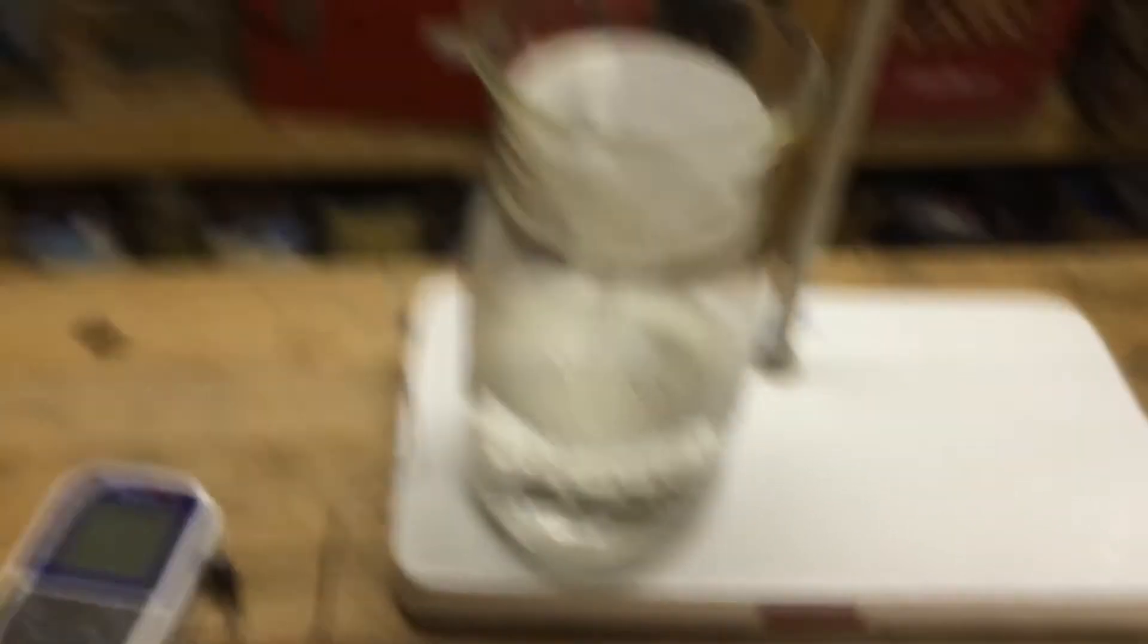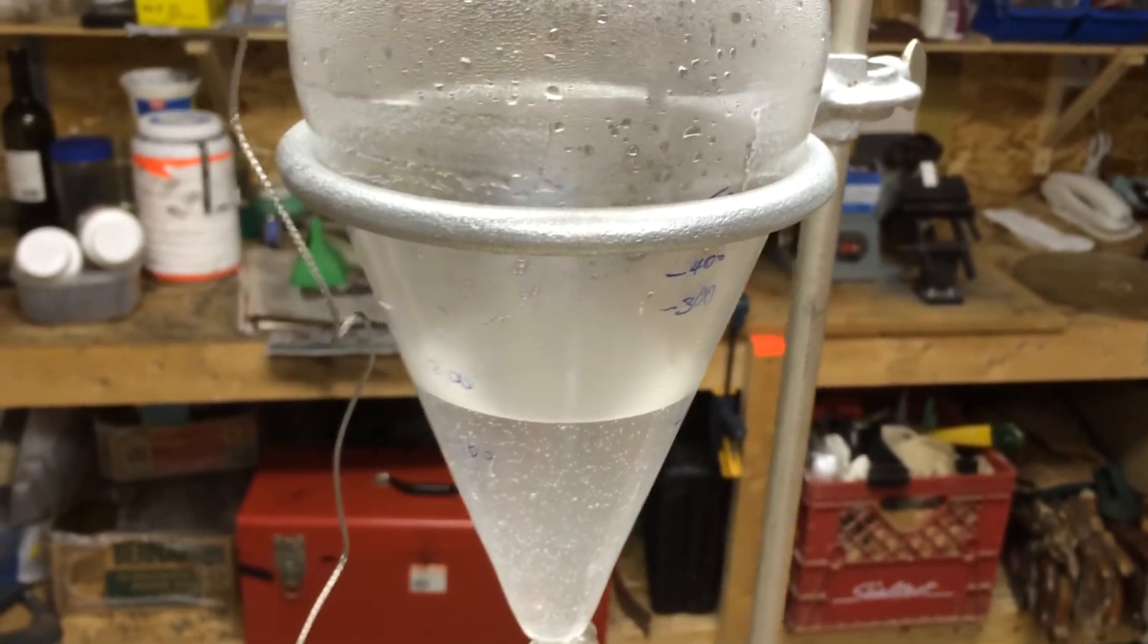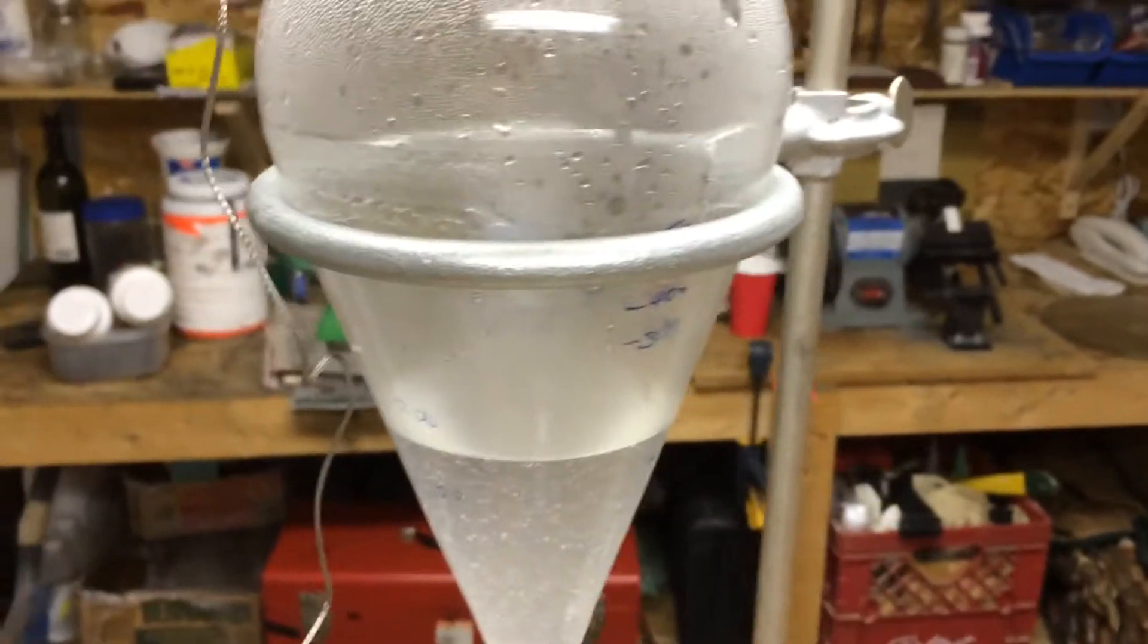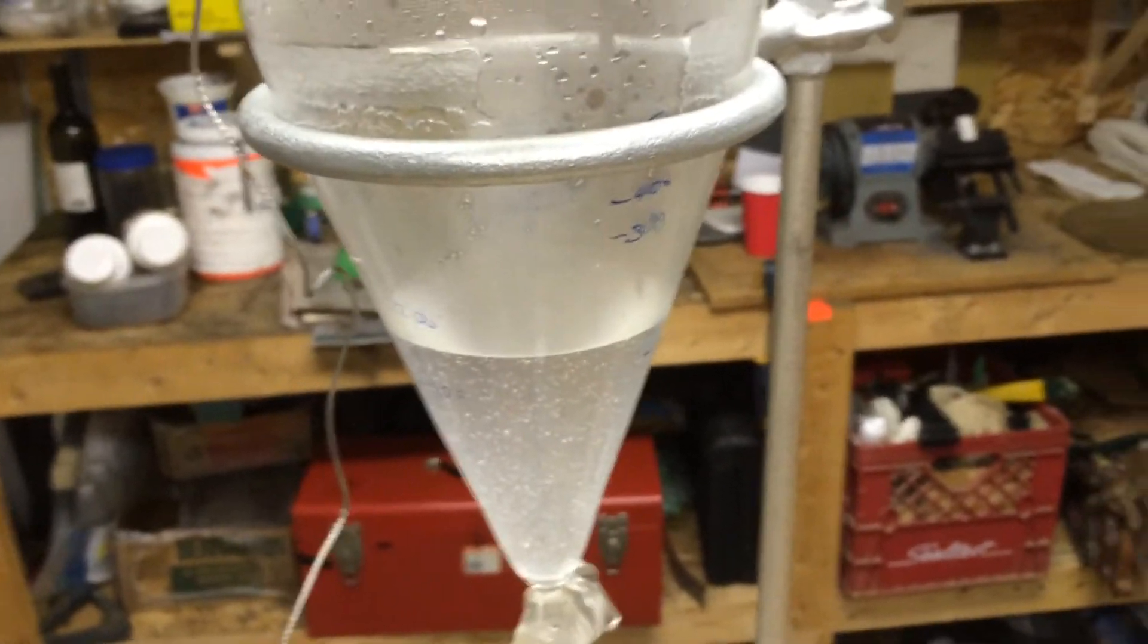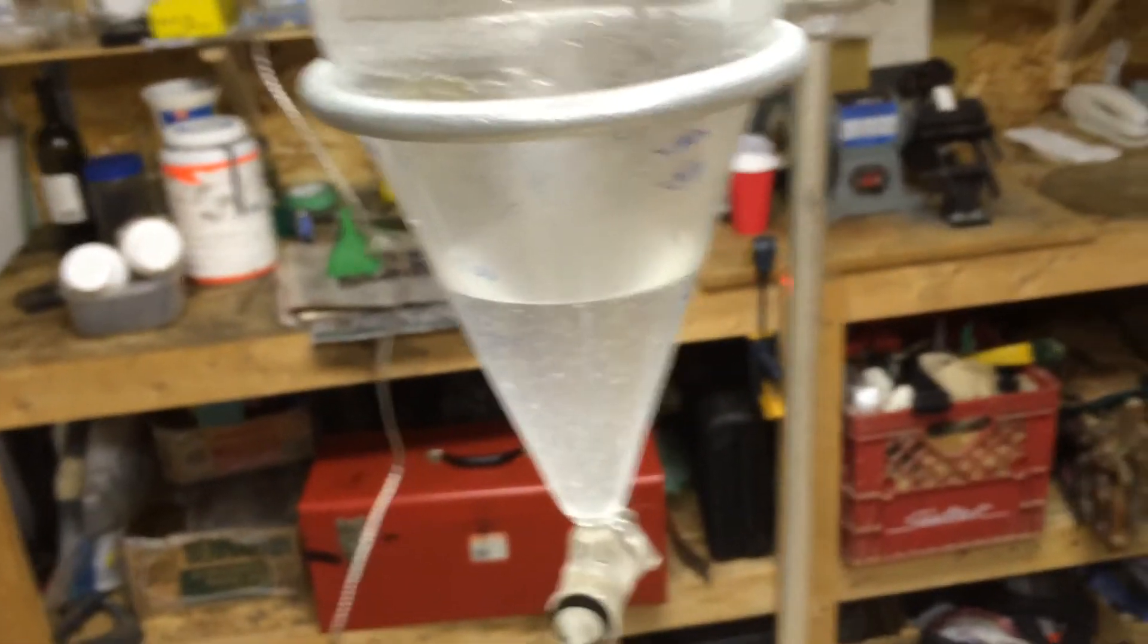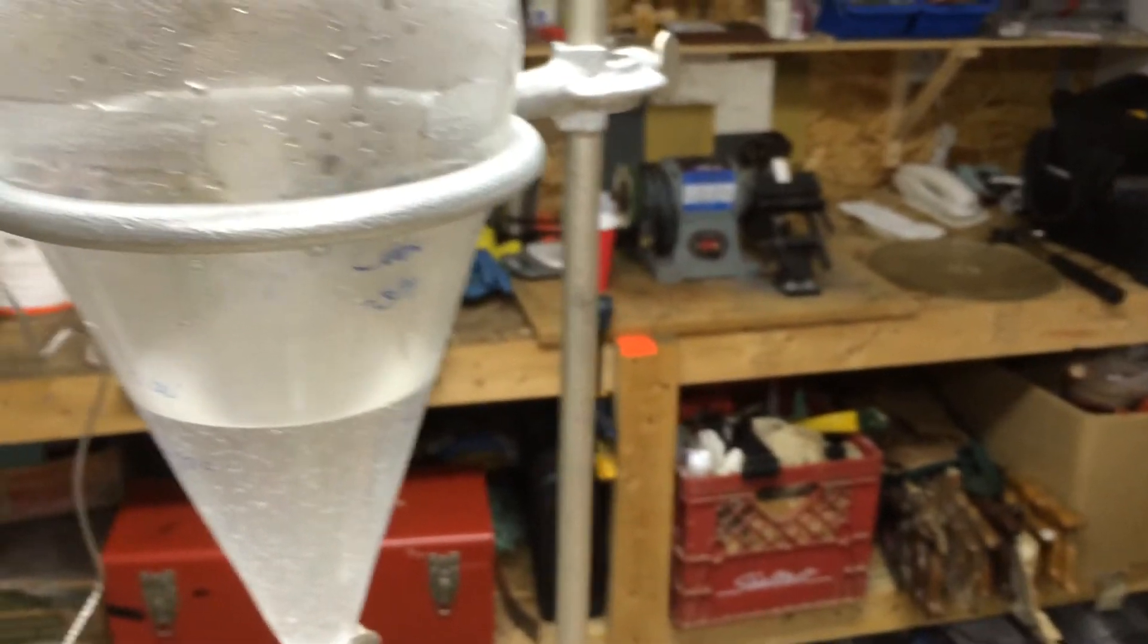And right now, I am filtering the hot water with the potassium chloride dissolved in it. You have to make a saturated solution, and that undergoes electrolysis and you start making your stuff.